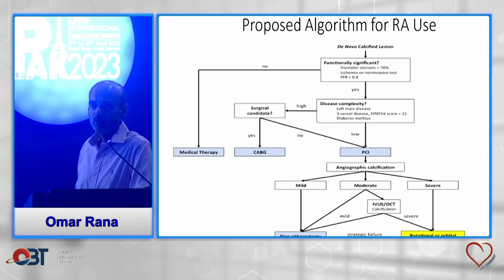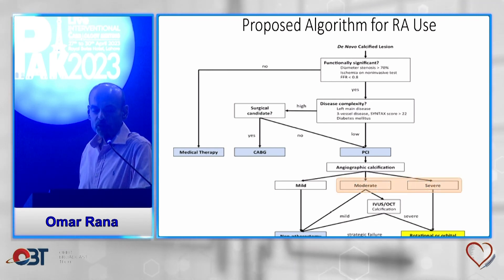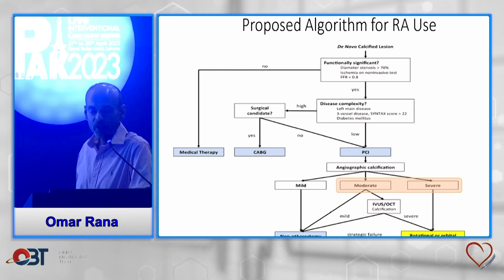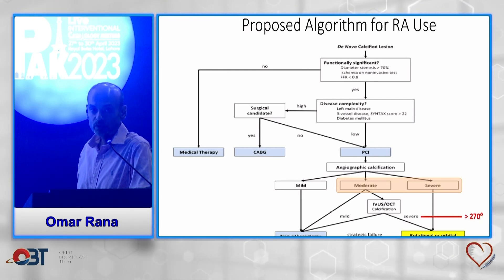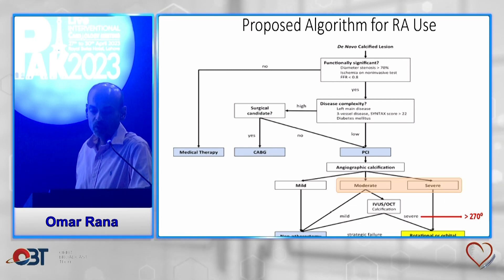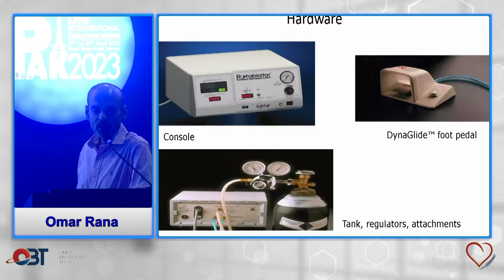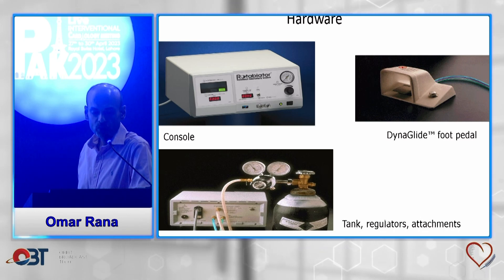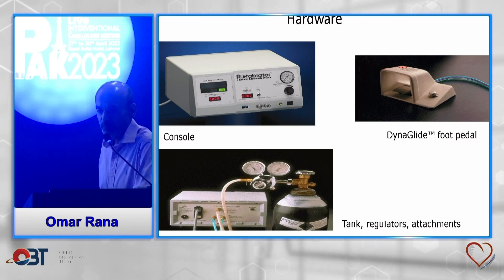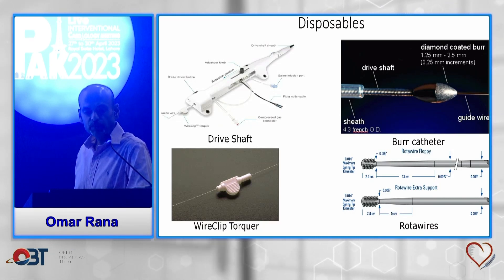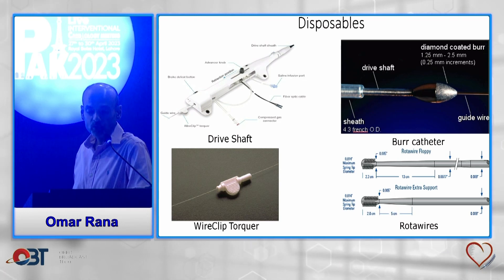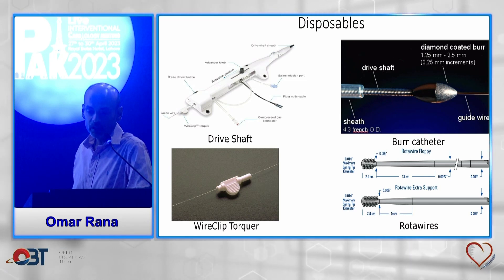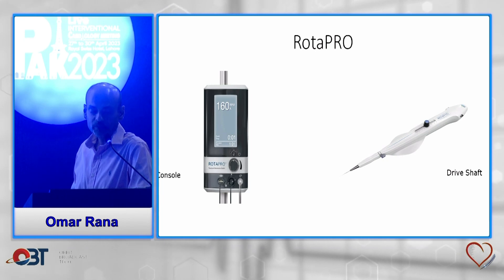Proposed algorithm for rotational atherectomy use: once you've decided to do angioplasty, if angiographically you see moderate to severe calcification, it is advisable to use intracoronary imaging if available. If you have a calcium arc of more than 270 degrees, you should definitely use rotational atherectomy. That's the first-iteration hardware — a console, tanks, regulators, and a DynaGlide foot pedal, plus disposables with the drive shaft, wires of two types (floppy and extra support), a wire clip torquer, and burrs in different sizes.